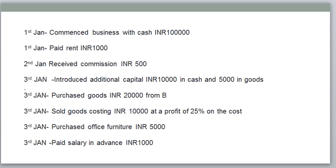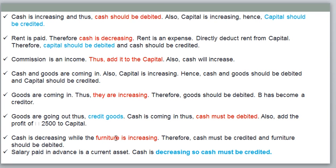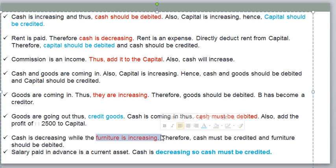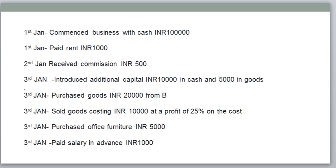Fifth transaction: purchased office furniture 5000 rupees. Furniture is increasing — your asset is increasing because you are purchasing. Assets are increasing so furniture is debited, and cash is decreasing so cash is credited. If assets are increasing then make it debit; if assets are decreasing then make it credit — a very simple concept.